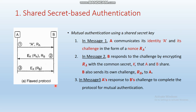In shared secret based authentication, a shared secret key is considered, represented as K (uppercase). Initially, party A wants to send a message to B, and they go through mutual authentication. In the first step, party A communicates with B by sending its identity, represented as A, and a random number RA chosen by party A.